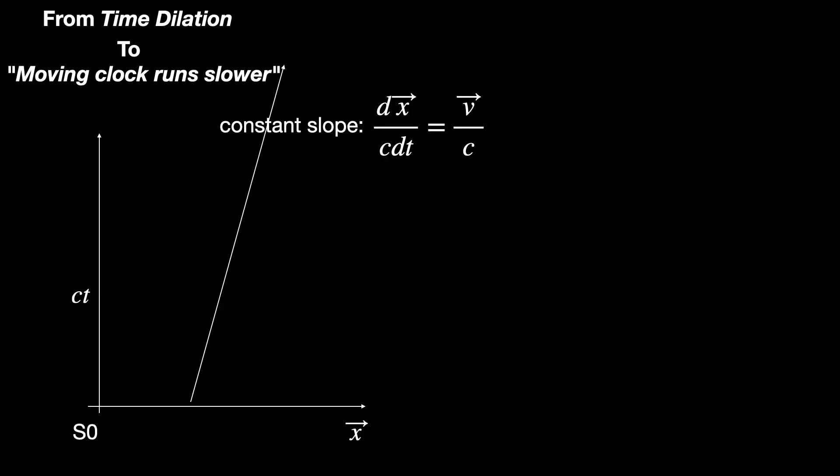Anyway, the moving guy in S' observes two events 1 and 2 taking place at his location when his clock reads T1' and T2' respectively. We see the same two events at two different spatial locations denoted by X1 and X2 vector coordinates in S0 frame at time instance T1 and T2 respectively as per our clock readings.